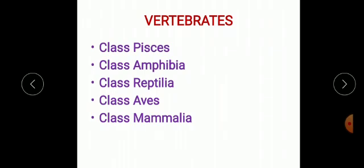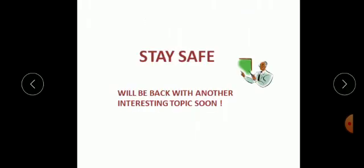So students, to recap: vertebrates are animals which have backbone. Vertebrates are further divided into five classes: Class Pisces, Class Amphibia, Class Reptilia, Class Aves, and Class Mammalia. Thank you and stay safe.